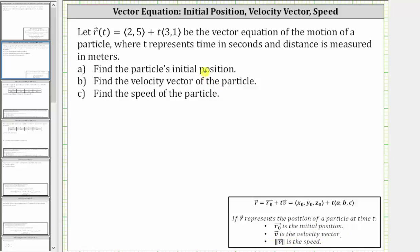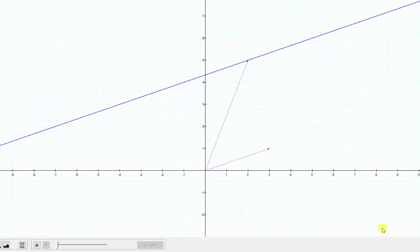Before we answer these three questions though, let's look at this graphically. The vector equation gives us this blue line. We'll notice how this black vector with components two comma five has its terminal point on the line, which means it is a position vector, or in this case the initial position, and notice how the purple vector with components three comma one is parallel to the blue line, which means it is a direction vector, and in this case the velocity vector.